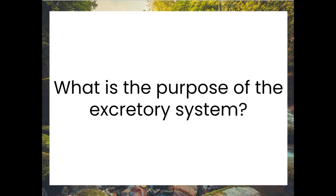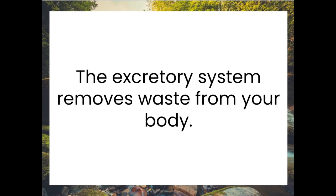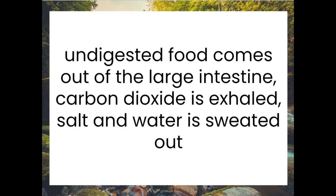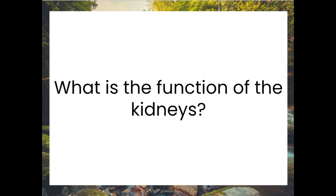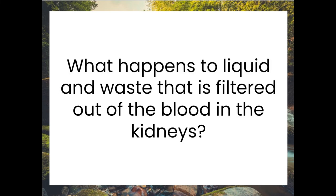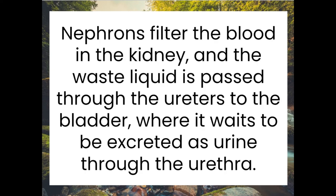What is the purpose of the excretory system? The excretory system removes waste from your body. Give an example of waste being excreted from the body. Undigested food comes out of the large intestine. Carbon dioxide is exhaled. Salt and water is sweated out. What is the function of the kidneys? Kidneys filter waste out of the blood. Nephrons filter the blood in the kidney and the waste liquid is passed through the ureters to the bladder where it waits to be excreted as urine through the urethra.